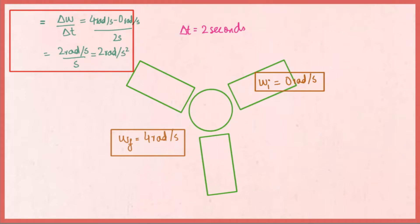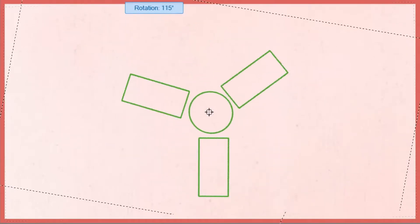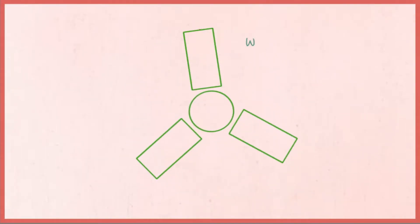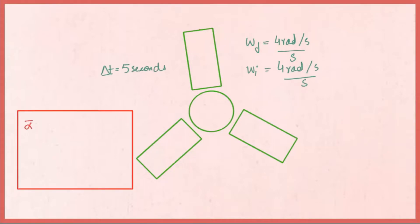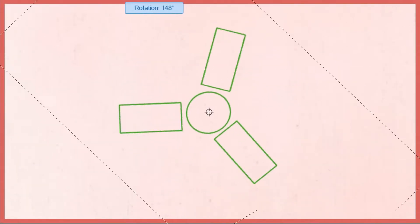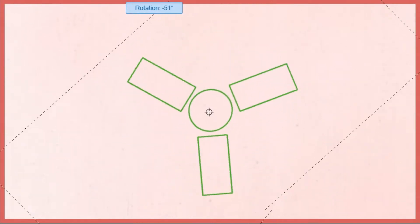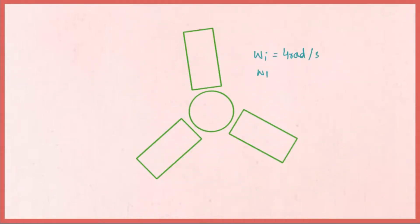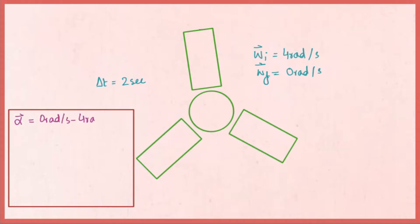The SI unit of angular acceleration is radians per second squared. If the fan rotates at a constant angular velocity of 4 radians per second for 5 seconds, the change in angular velocity is zero, so angular acceleration is zero. When the fan is turned off, the angular velocity decreases from 4 radians per second to zero in 2 seconds, giving an angular acceleration of minus 2 radians per second squared.